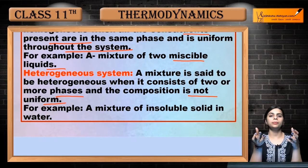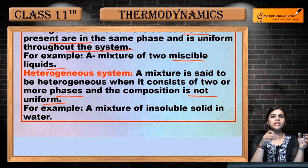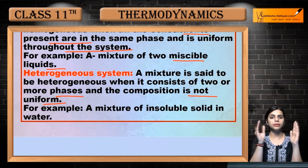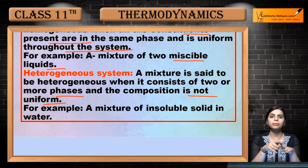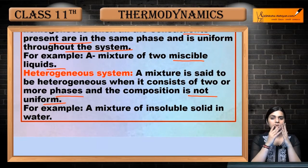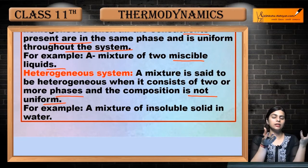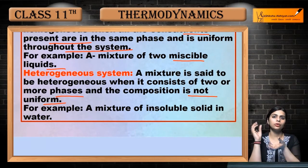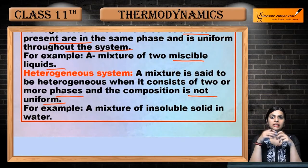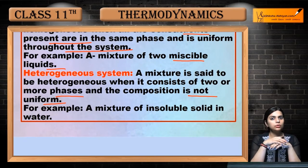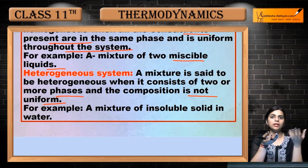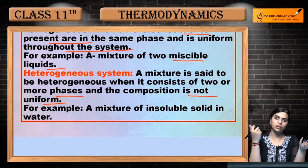When you have any constituents — those constituents can be 1-2 or more — and when you combine those constituents, after combining them you have no uniform state. Suppose if you take a glass of water and add a little sand in it, the sand will not dissolve in the water. When you make that mixture, the sand will be visible and the water will also be visible separately.